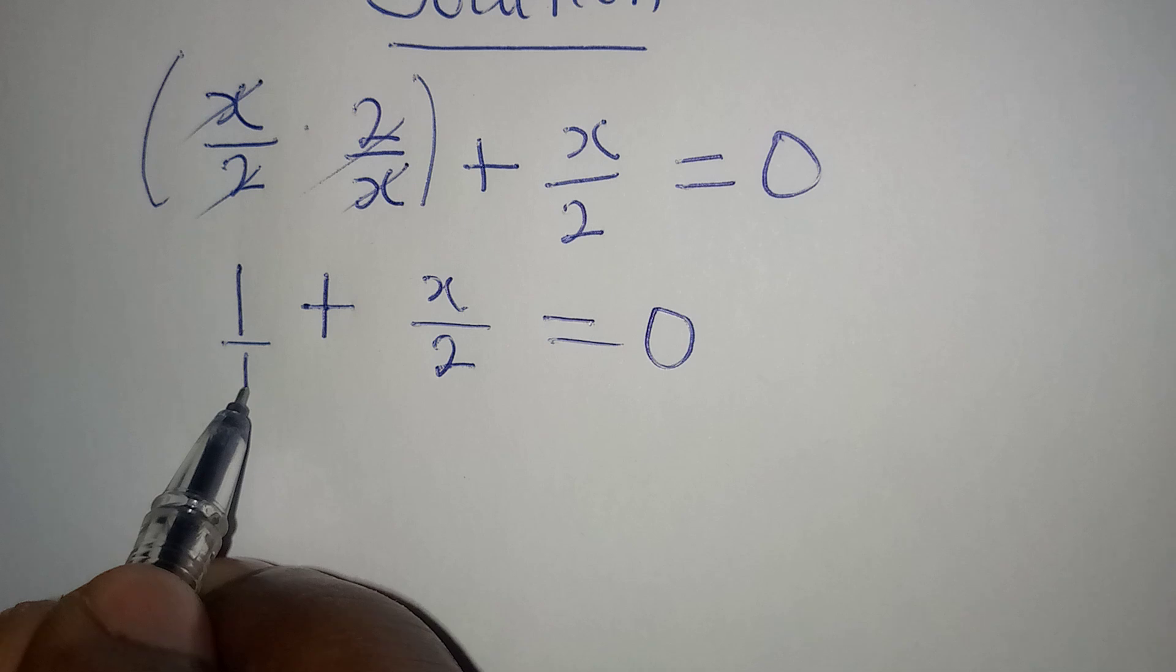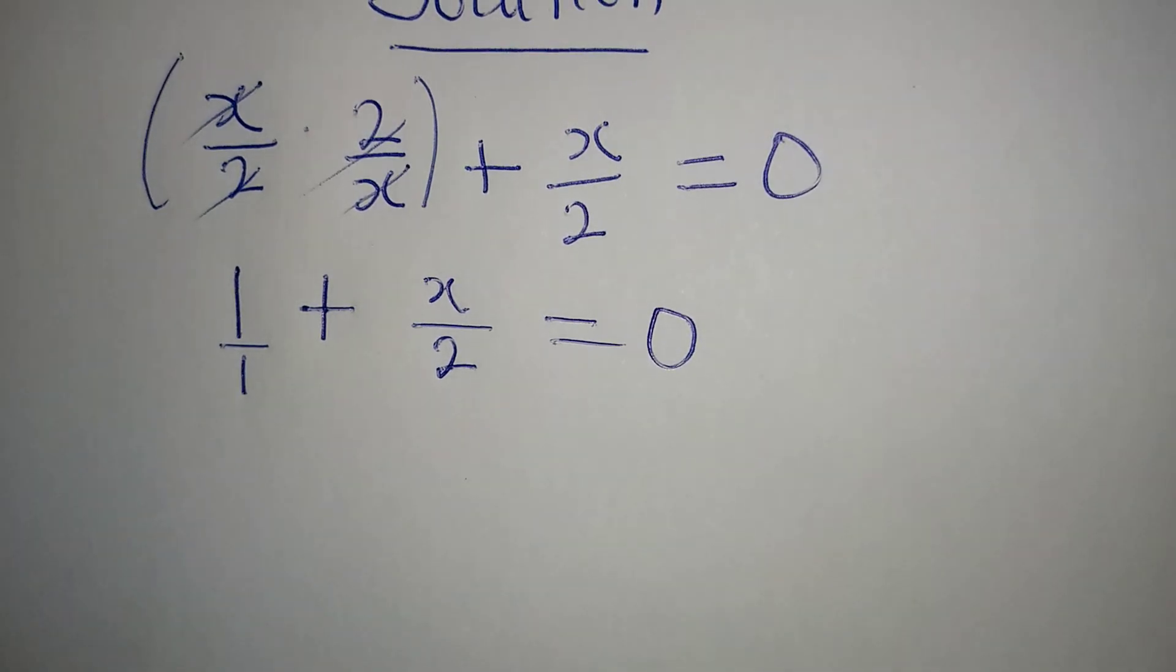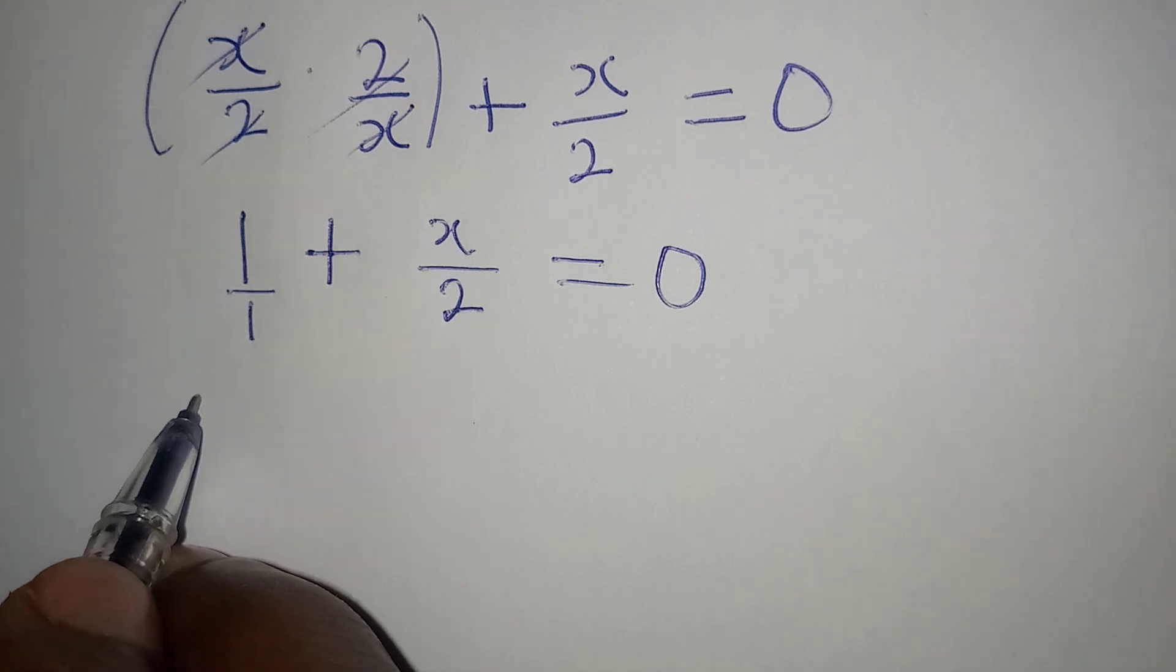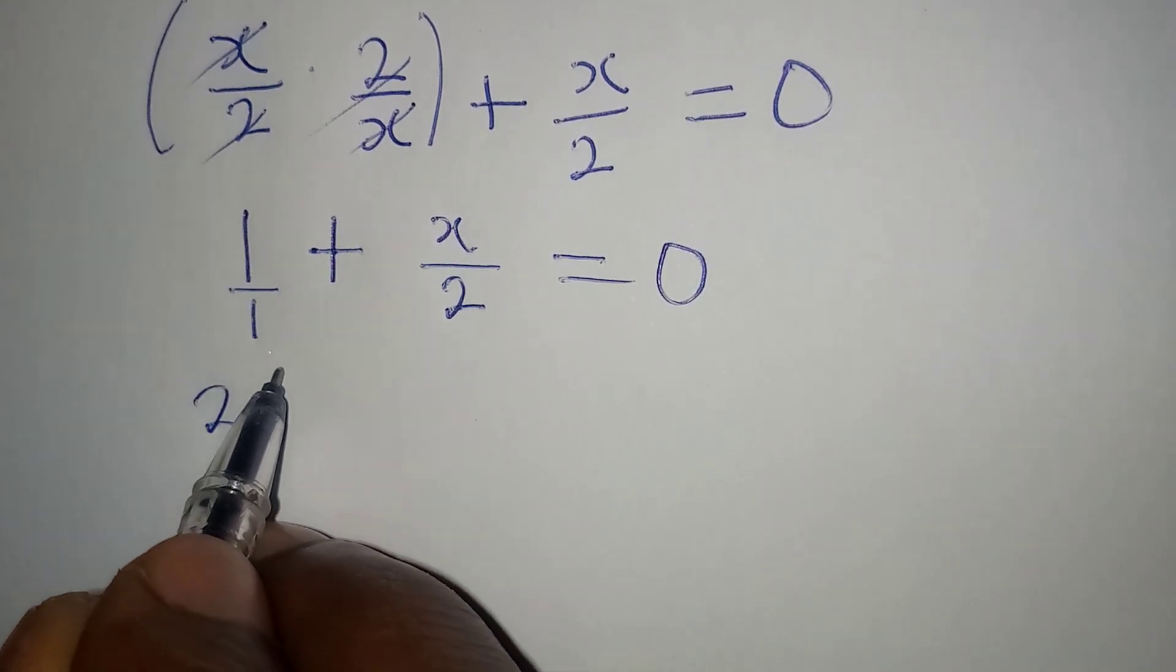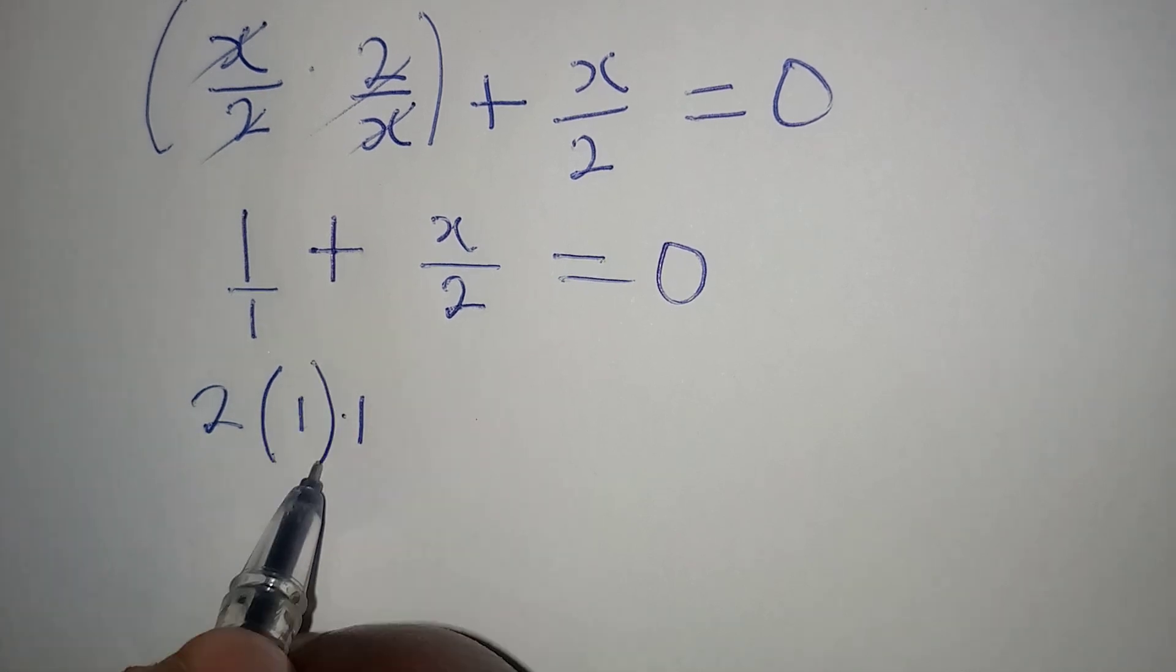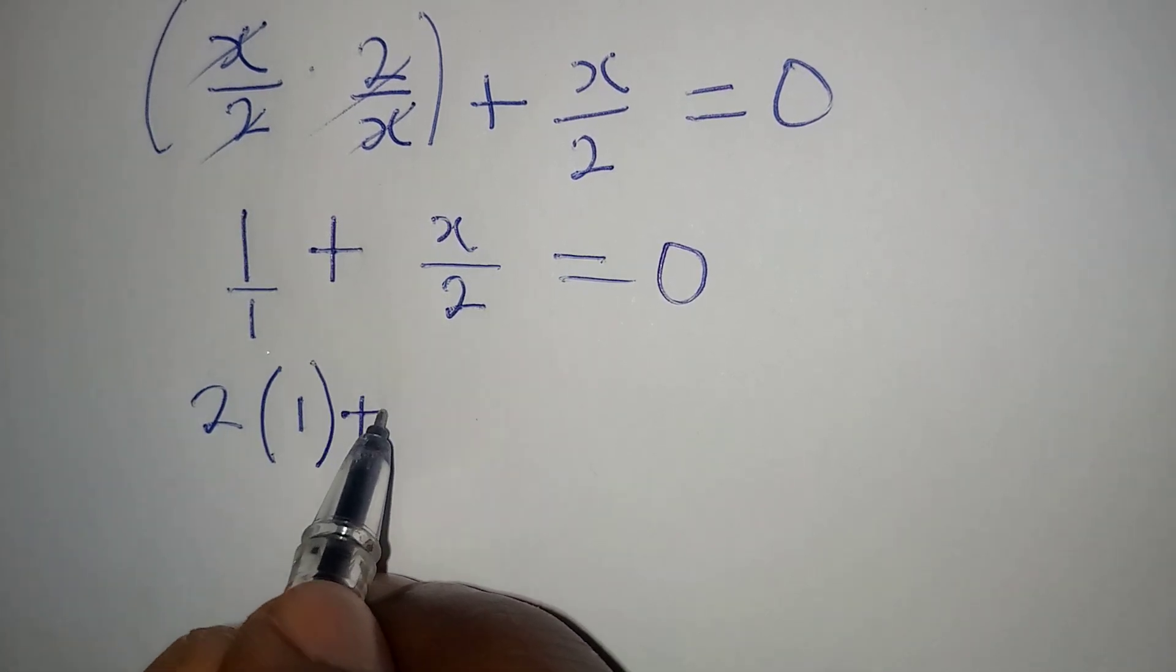From here we believe that this is over 1, so we can find the LCM which is going to be 2. So we're going to have 2, which is the LCM, multiplied by 1, then plus